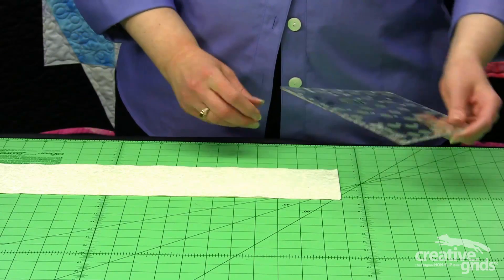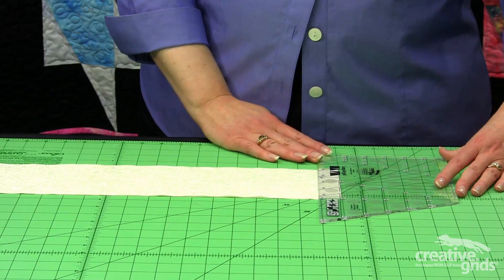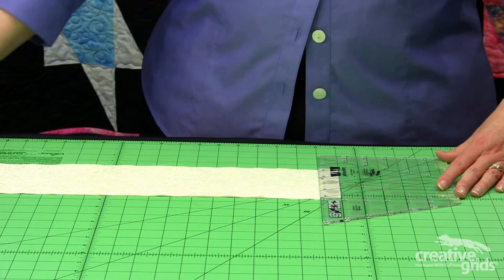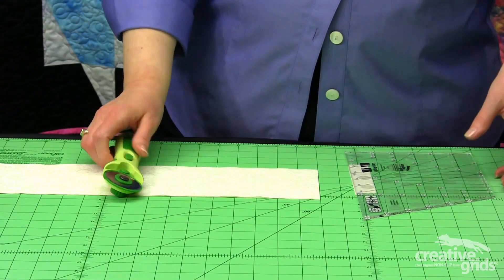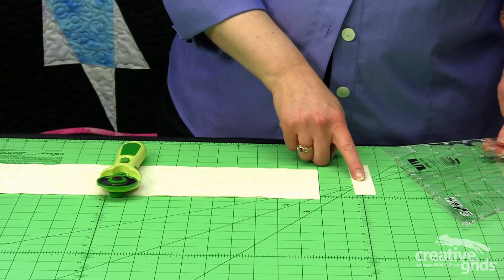Then we'll use the ruler to trim our strip so we have a good start. And it's a very efficient cut, this is all we're going to lose off of that strip.